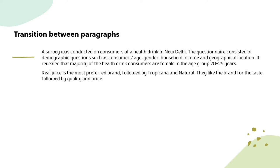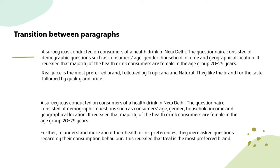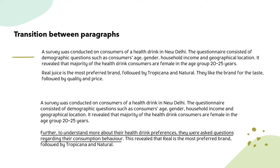Here's another example: two paragraphs where the first discusses the demographic background of a survey and the second discusses the popularity of a brand. As a reader, there's no connection — why did the author ask respondents about their preferred brand? There's no indication. A background sentence linking the two is needed. Adding it gives: 'The survey was conducted on consumers of a health drink in New Delhi. The questionnaire consisted of demographic questions, revealing that the majority of health drink consumers are female in the age group 20 to 25 years. Further, to understand health drink preferences, they were asked questions regarding their consumption behavior, revealing that Real is the most preferred brand, followed by Tropicana and Natural.' This added sentence gives appropriate transition so the reader understands how demographic background relates to consumer brand preference.